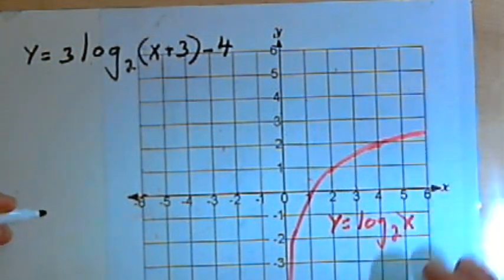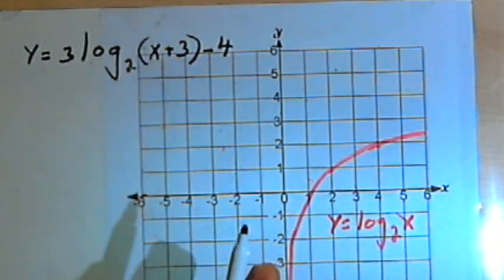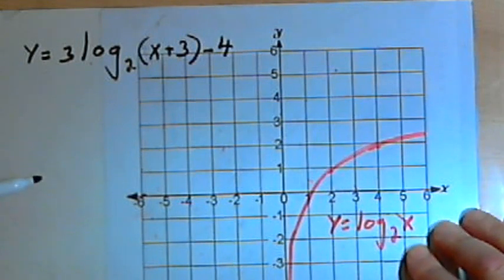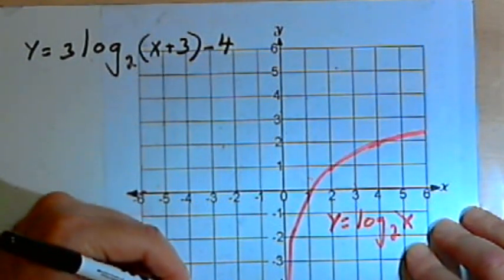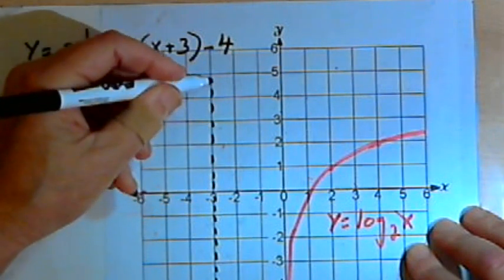This x plus 3 is going to shift the graph over 3 units to the left. That's what we just saw, in fact. So I can draw that vertical asymptote now. That's going to be at x equals negative 3.